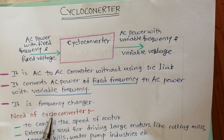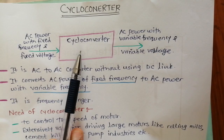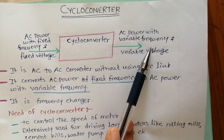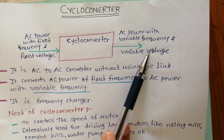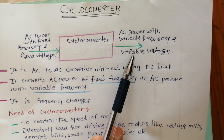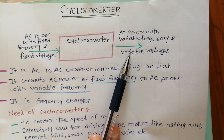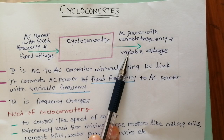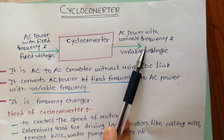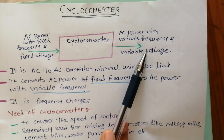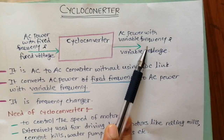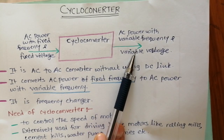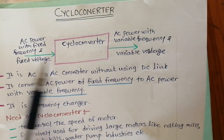The biggest advantage of the cycloconverter is that its output frequency can be reduced all the way down to zero. This is important because it allows us to start very large motors under full load — if a motor has maximum load and minimum speed, we can reduce the frequency to zero and then gradually increase the motor speed by increasing the output frequency of the cycloconverter.